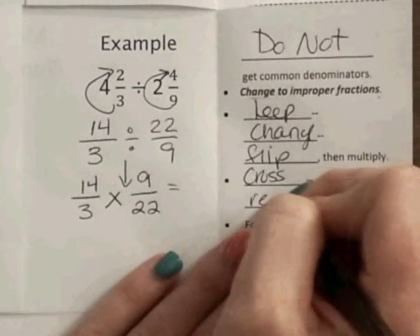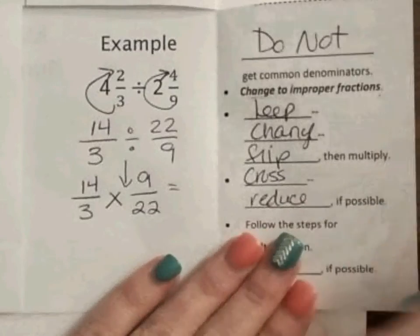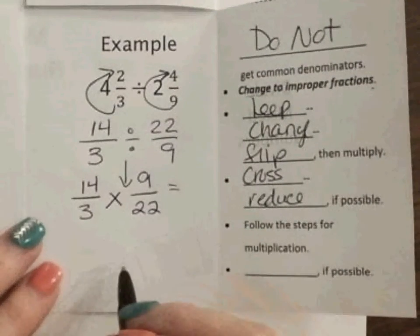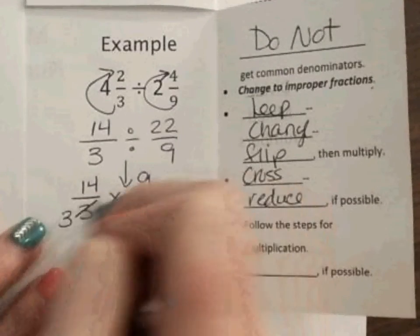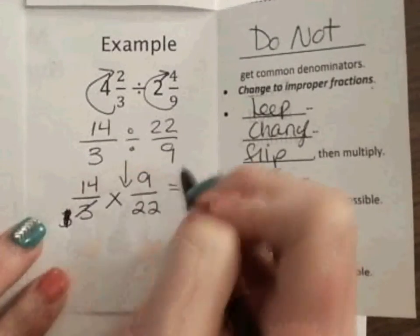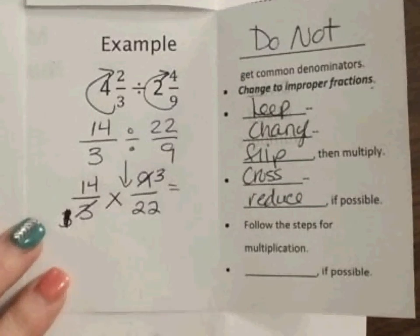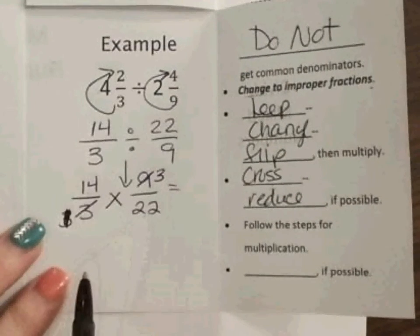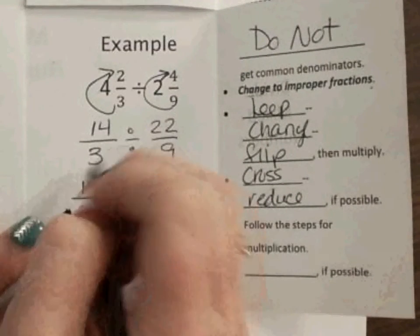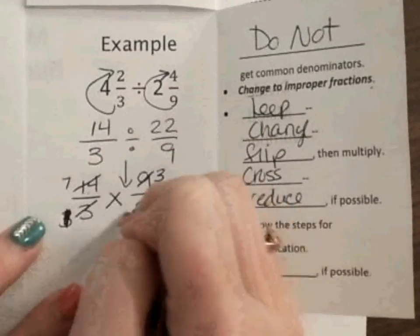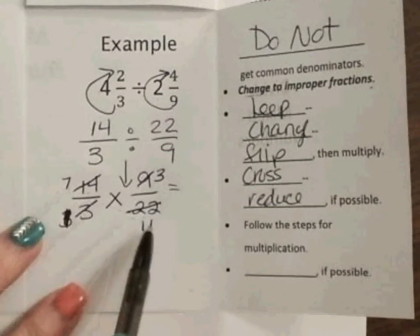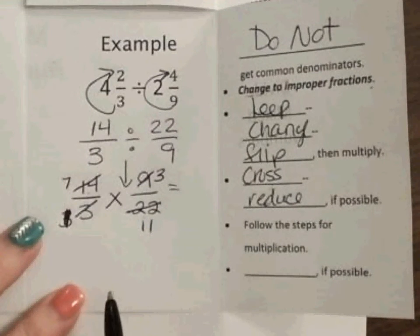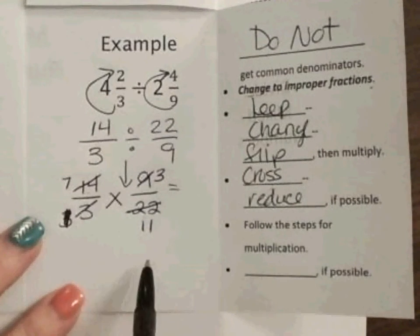And again, if you do not like that, just multiply the top, multiply the bottom, and simplify. So, I know that 3 and 9 share a 3, so I'm going to divide both, and that should be a 1, not a 3. That's where my 3 comes from. 14 and 22, I know 2 goes into both of them, so if I divide them by 2, that's 7, that gets me 11. I know that 3 won't go with 11, 7 won't go with 11. So, now, I'm going to finish up by just multiplying across.